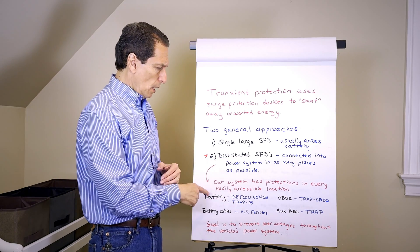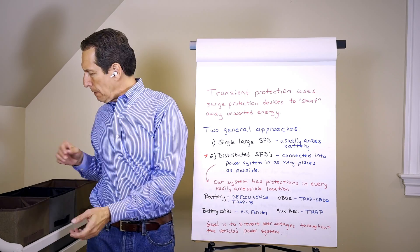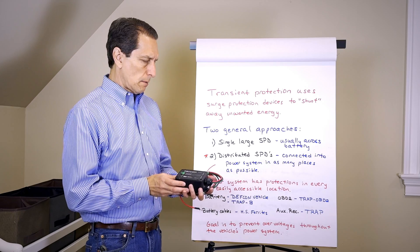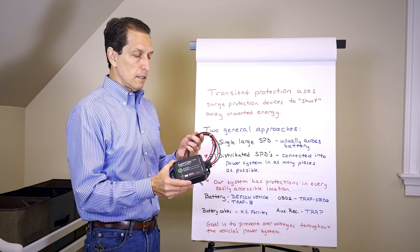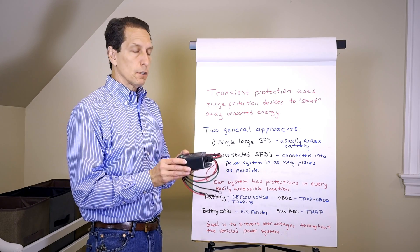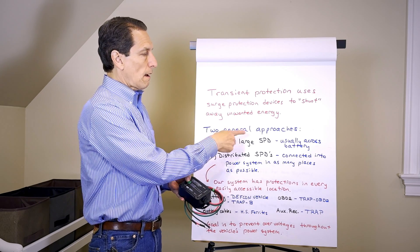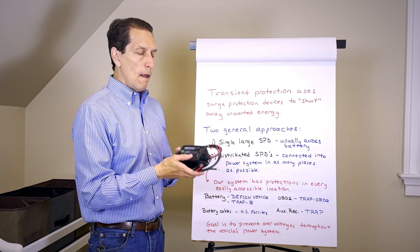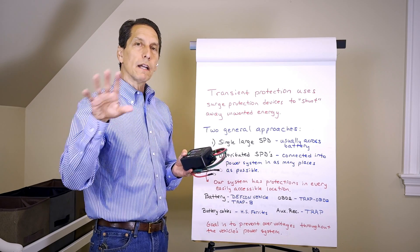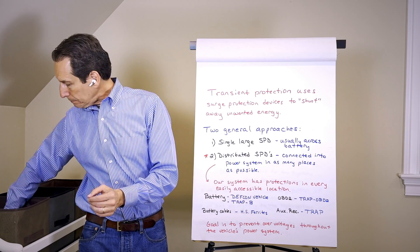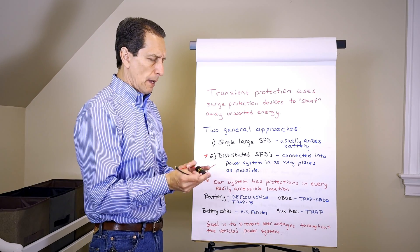We have a number of different ones. You can attach across the battery. We have the Defcon Vehicle—this is a big, heavy-duty surge protection device that goes right across the battery. It's similar to the single large surge protection but it's one of several I recommend for this distributed approach.